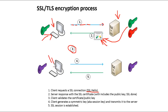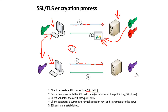I then make up a unique symmetric key, encrypt that symmetric key with the server's public key, and send it back to the server over the unsecured wire. With the help of both mechanisms, only me and the server know this symmetric session key, and from that point on, the SSL session is established.